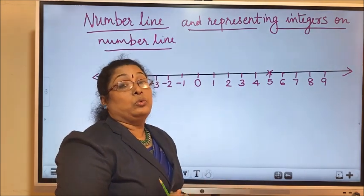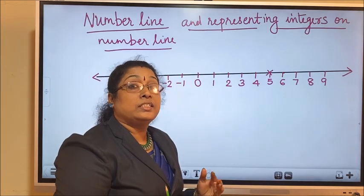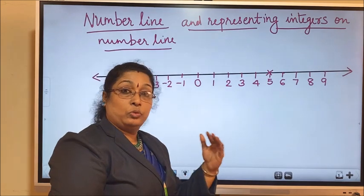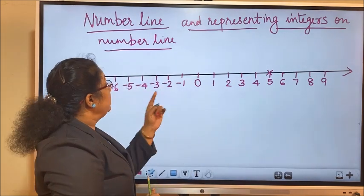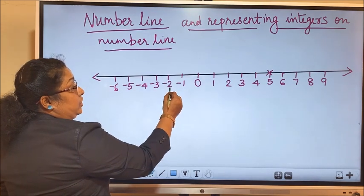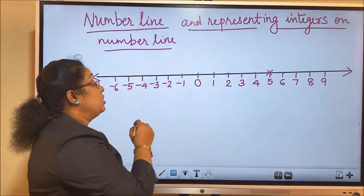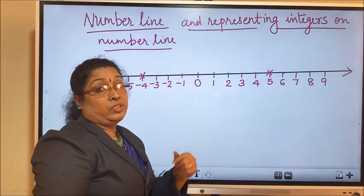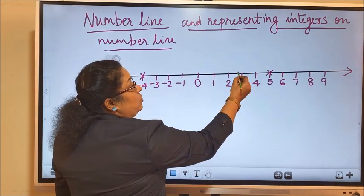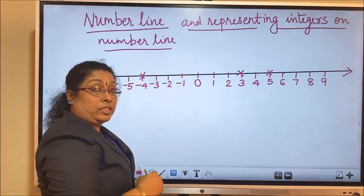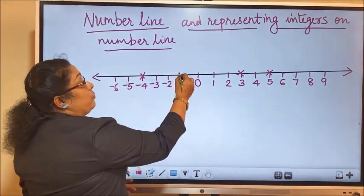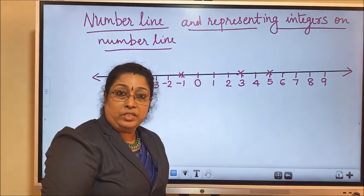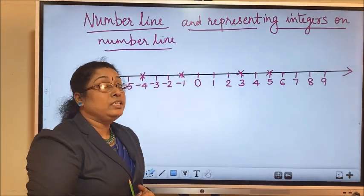Now if you are to represent a negative integer, say negative 4, to which side should we move? We should move to the left side of 0. Negative 1, negative 2, negative 3, negative 4 is here. So mark the number here — negative 4. Again, if you want to mark positive 3, move to the right side of 0. If you want to mark negative 1, move to the left side of 0. So the right side of 0 has positive integers and the left side of 0 has negative integers.